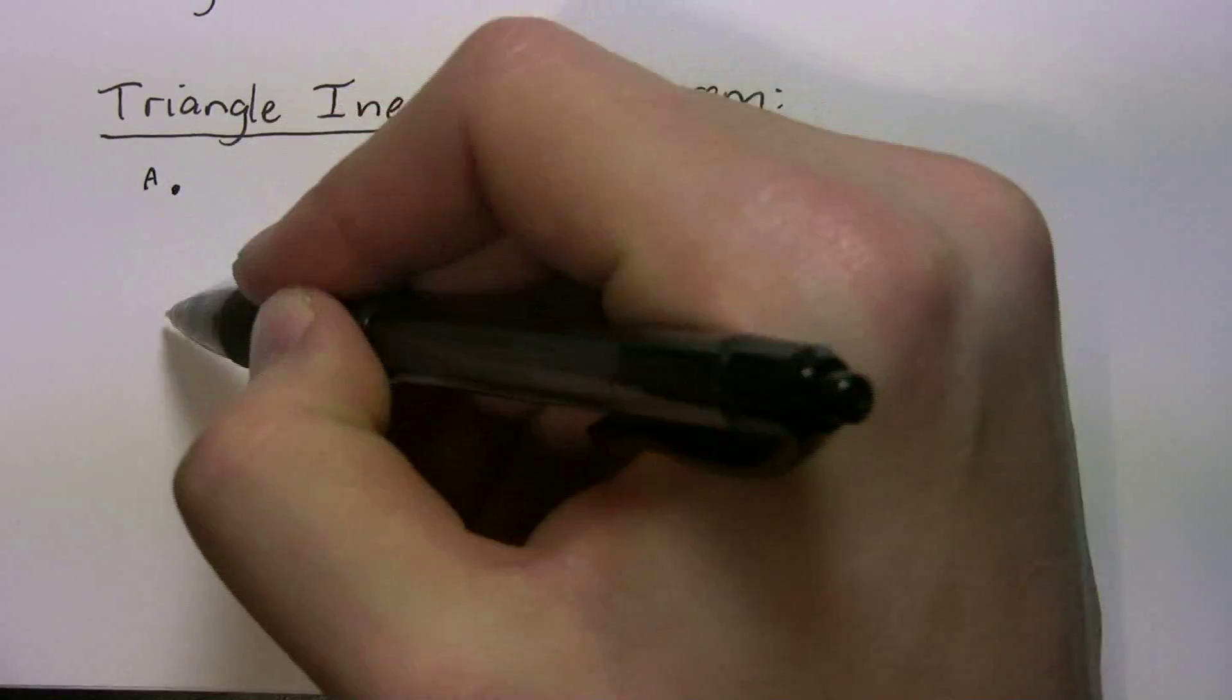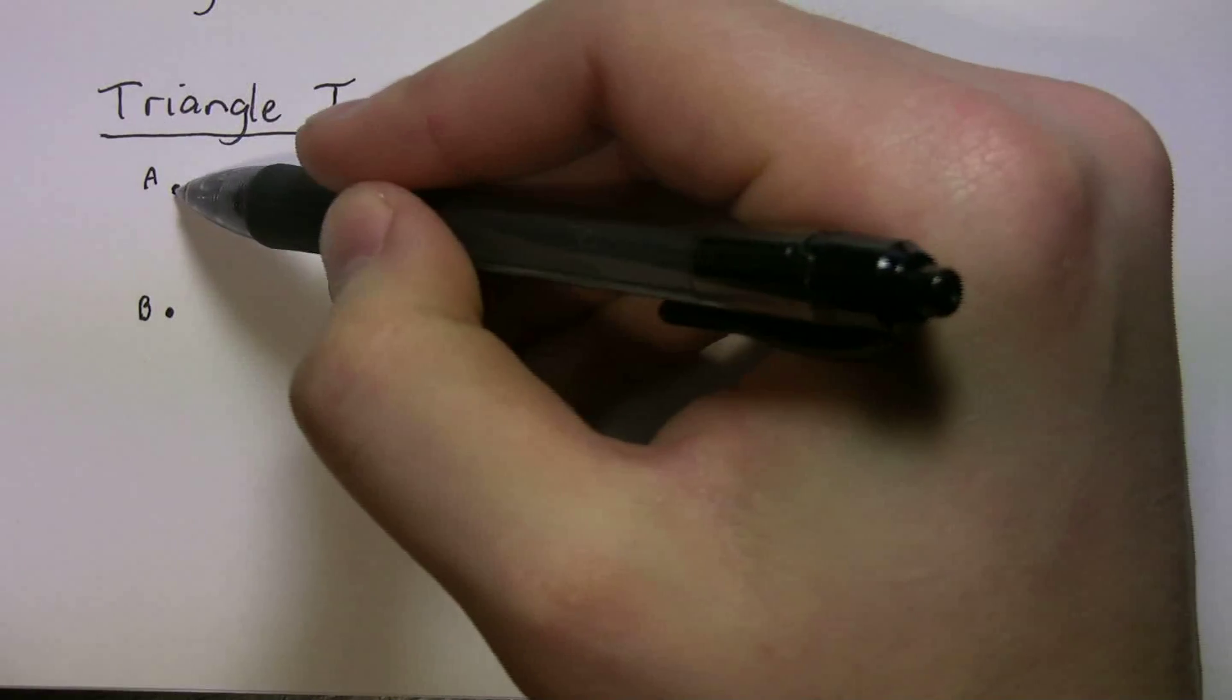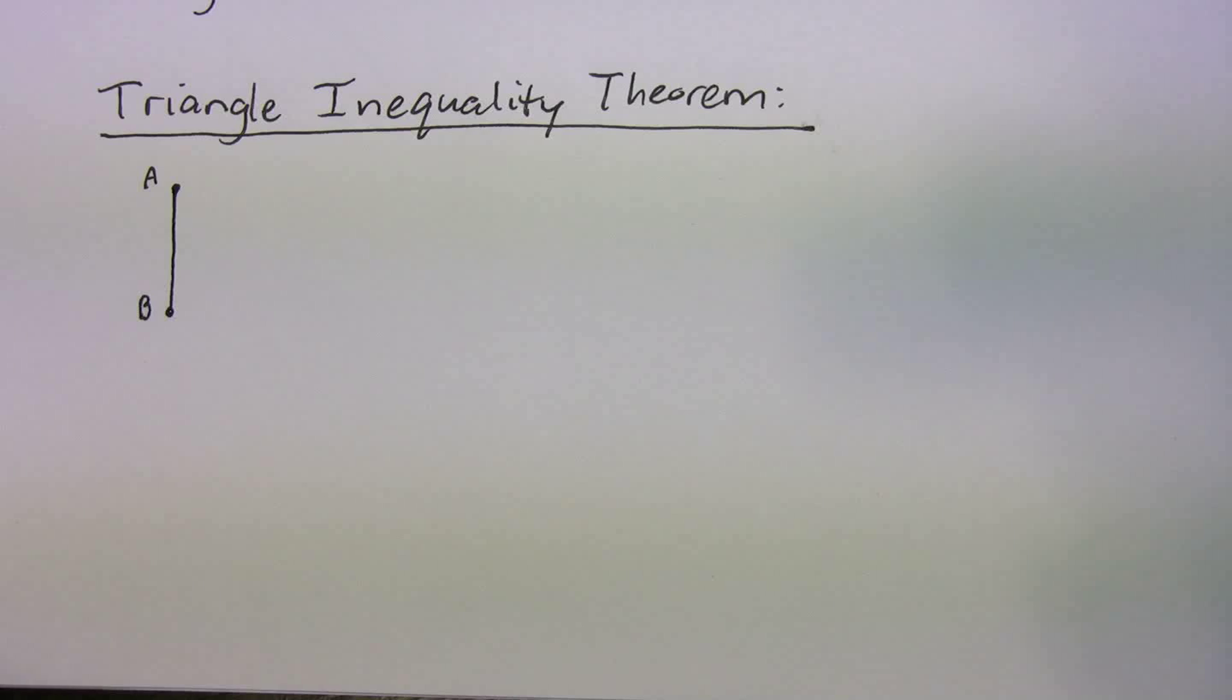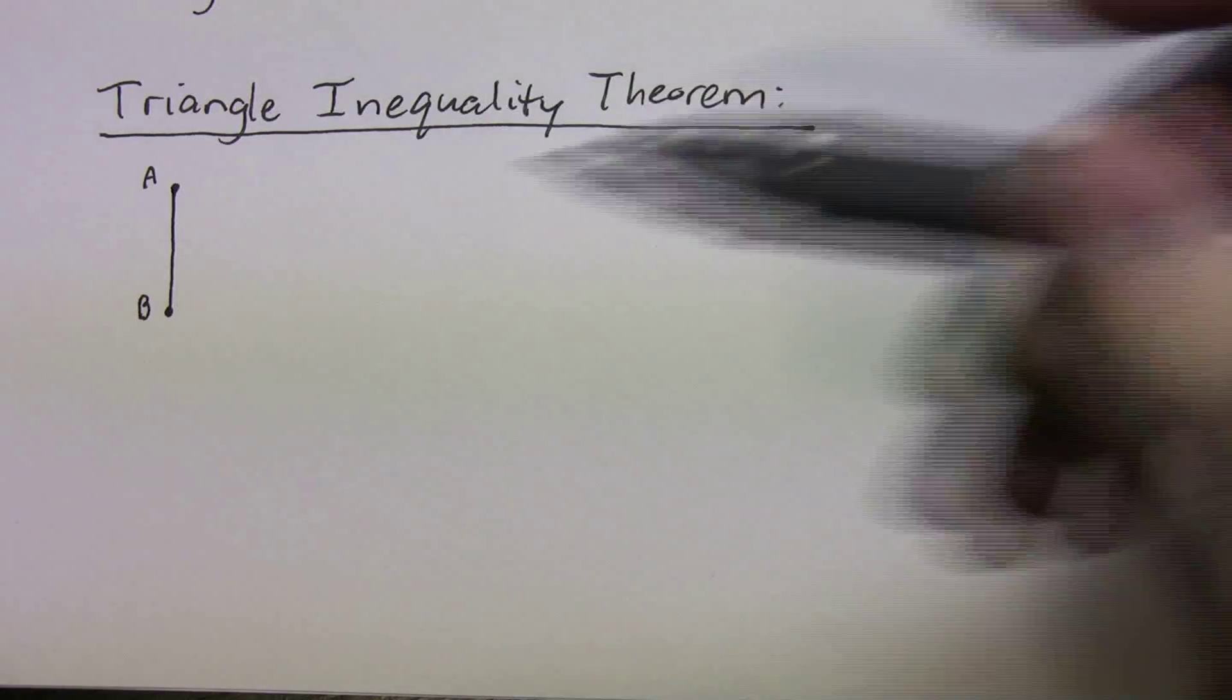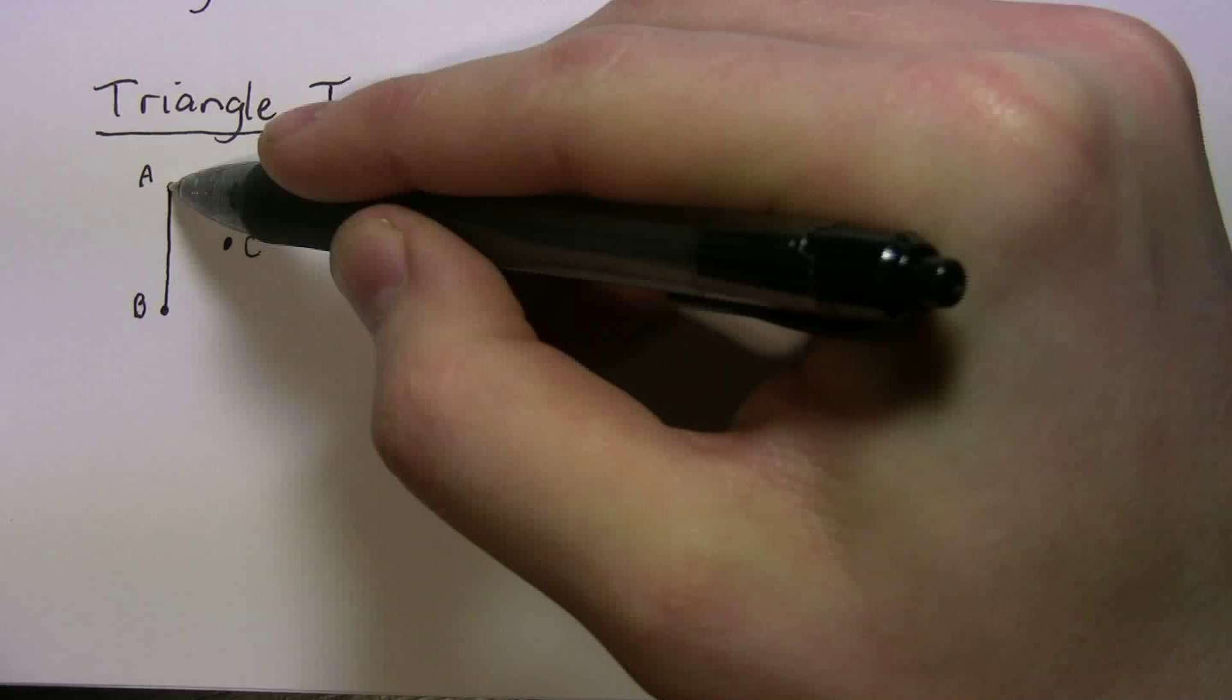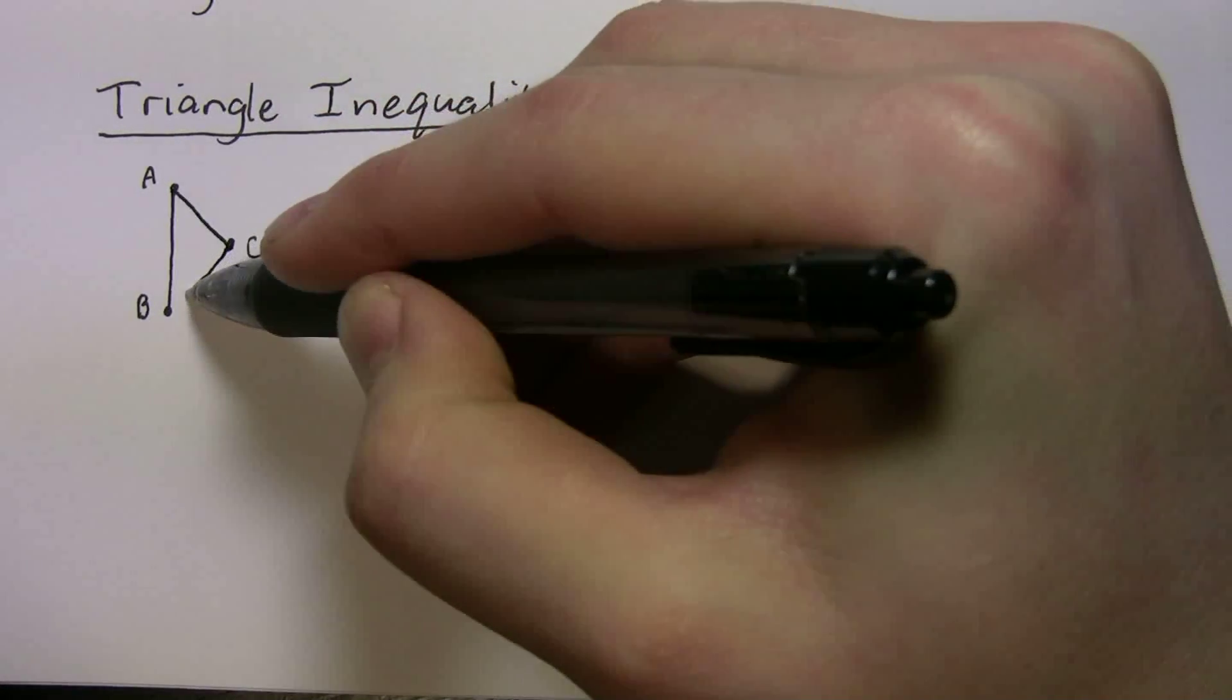If you have some point A and some point B, let's say we take a length of rope and we go from A to B. So that length of rope will be a straight line, right? The shortest distance between two points is a straight line. So we go from there, that's a straight line. Let's say I take another length of rope, and I stretch it from point A to point C, and now I go from point C to point B.